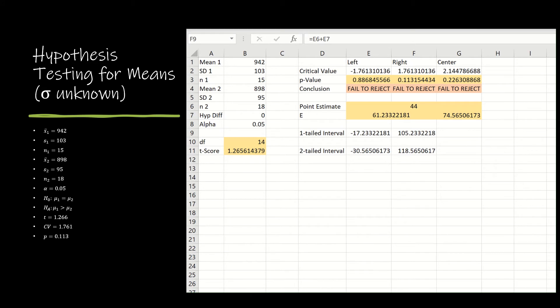Now let's take a look at how to use Excel. Now I'm going to go through the entire spreadsheet with you in this example, because this is the only example that we will do where we have sigma unknown with unequal variances.